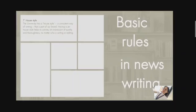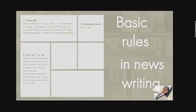The seventh rule is house style. The university has a house style — a consistent way of writing that is part of your brand. Having a house style helps convey an impression of quality and thoroughness no matter who is writing or editing. Exclamation marks are prohibited — do not use them as they tend to misinterpret what you are saying. Do not use 'I' or 'we.' Readers won't easily know who wrote a news article, so don't talk about yourself in the first person. Always name individuals — instead of 'we helped a lecturer,' say 'the news history department helped a lecturer.'